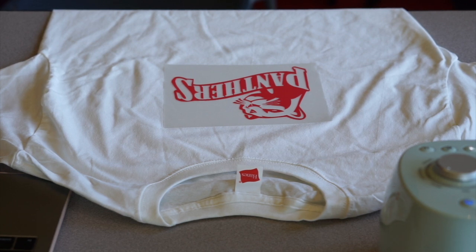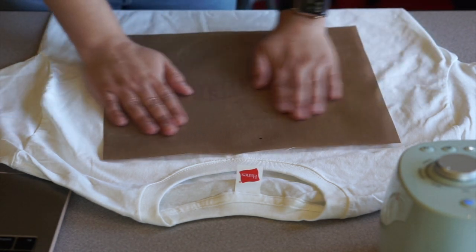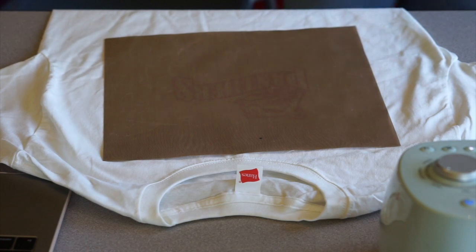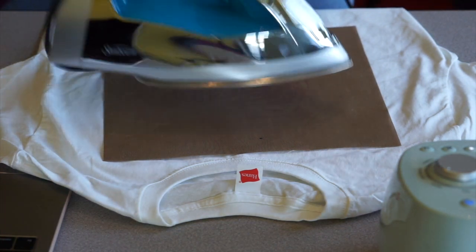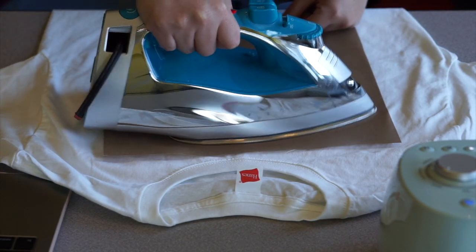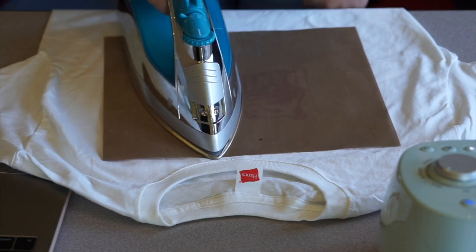Once I'm happy where the design is, I'll go ahead and use this sheet that came with the iron-on vinyl that I purchased from Amazon. It's basically just a Teflon sheet and it distributes the heat evenly.